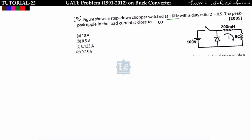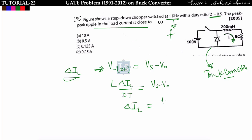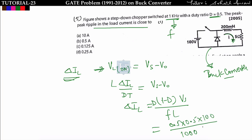The fifth problem: a step down chopper with switching frequency 1 kHz and duty ratio 0.5. We need to find the peak-to-peak ripple in load current. In a buck converter, find V_L_on = V_s − V_naught, then use V_L_on = L·ΔiL/(D·T). Substituting V_naught = D·V_s, we get ΔiL = (1−D)·D·V_s / (f·L). With D = 0.5, V_s = 100 V, f = 1 kHz, L = 200 mH.